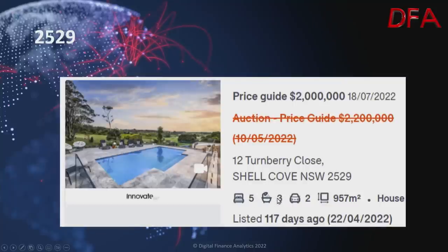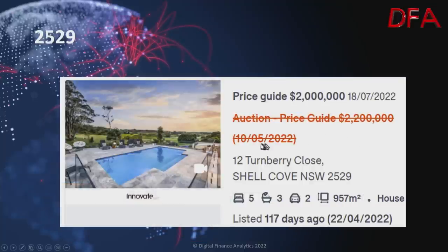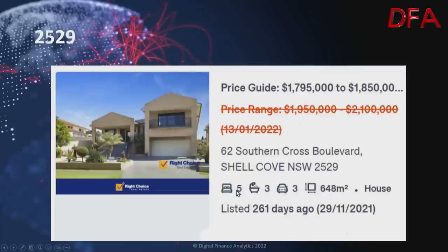In Shell Cove, a five-bedroom, three-bathroom house on 957 squares listed 117 days ago on the 22nd of April 2022, was on at $2.2 million in May, now reduced to a $2 million guide on the 18th of July. Another Shell Cove property — five bedrooms, three bathrooms on 648 squares, listed 261 days ago on the 29th of November 2021 — was originally $1.95 to $2.1 million, now at $1.795 to $1.85 million.